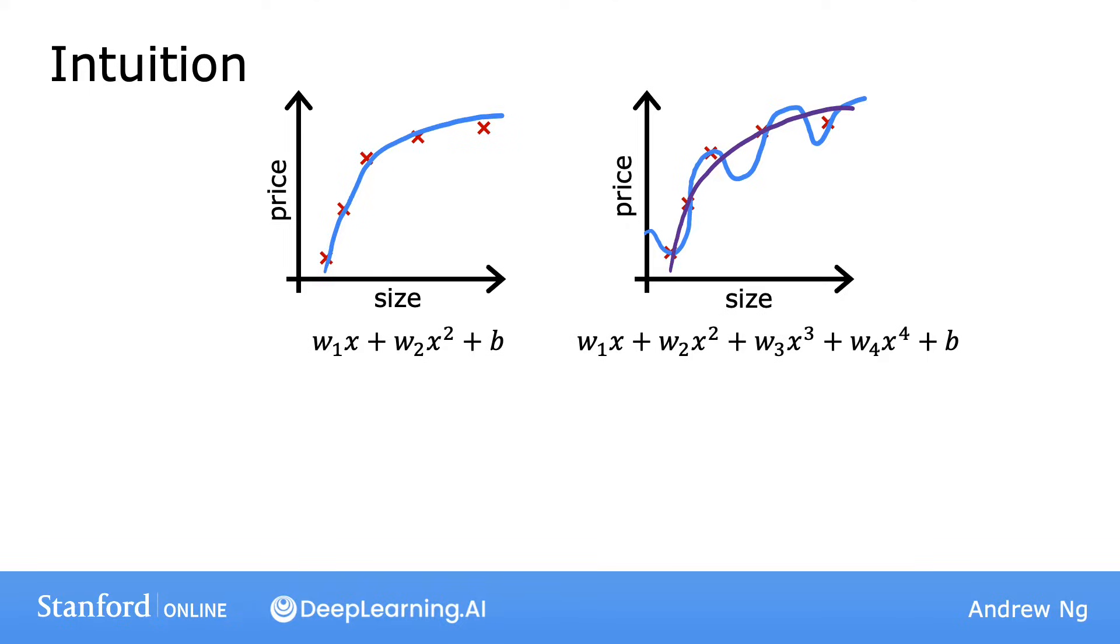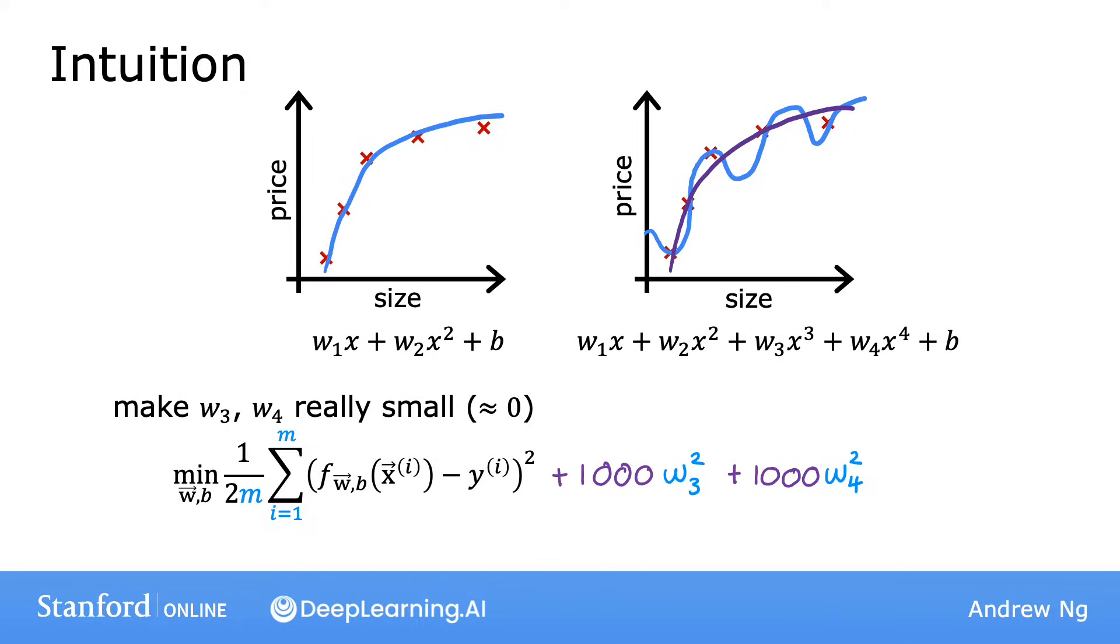But now, consider the following. Suppose that you had a way to make the parameters w3 and w4 really, really small, say close to 0. Here's what I mean. Let's say instead of minimizing this objective function, this is a cost function for linear regression. Let's say you were to modify the cost function and add to it 1000 times w3 squared plus 1000 times w4 squared.